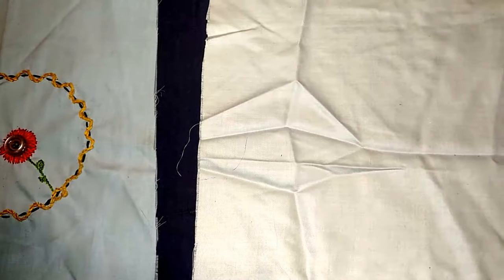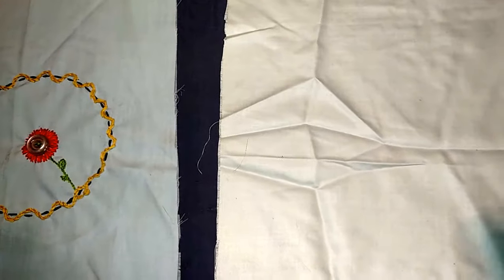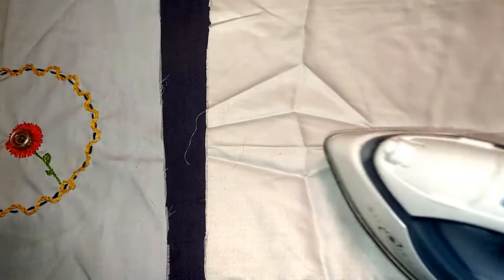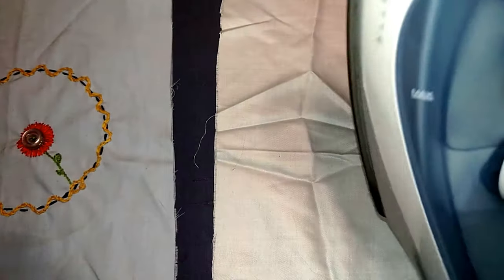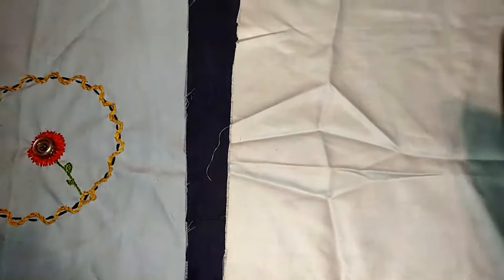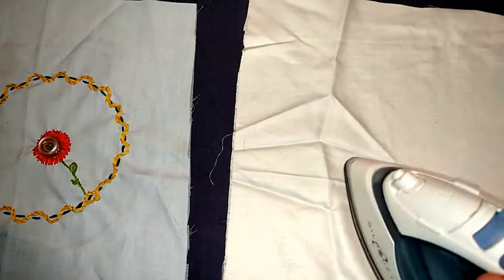This piece on the right, you can see it's very creased, and I preheated my iron to the cotton setting because it's cotton fabric. I'm just going to pass it over it.